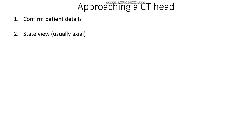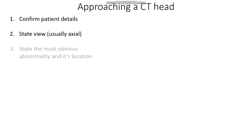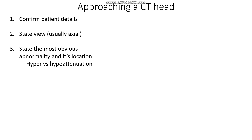Following this, I like to state the most obvious abnormality first and its location. When I state the most obvious abnormality, the things I want to describe are: is it hyperattenuated, which means there's a lot of white on the CT head scan, or is it hypoattenuated, which means there are areas of grey? As well as this, I like to describe the shape or any features of the lesion that we have in front of us.